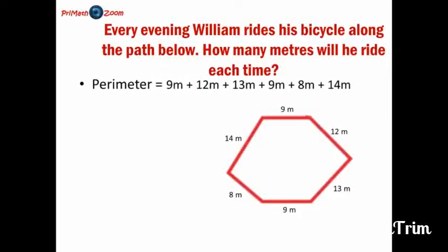Here it goes. Perimeter would be equal to 9 meters plus 12 meters plus 13 meters plus 9 meters plus 8 meters plus 14 meters. And that would give us a sum of 65 meters. Right. This sum here will tell us how many meters William will ride each time.